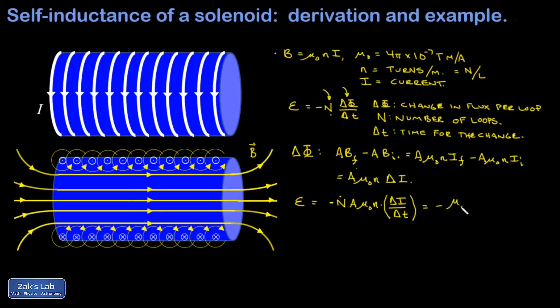So I get negative mu naught n squared A over the length of the coil, and I'm going to use a lowercase L for this because we need capital L for something else, times delta i over delta t.